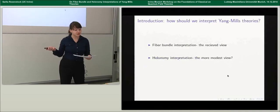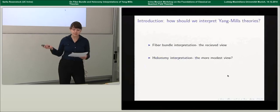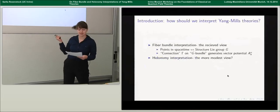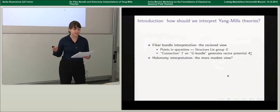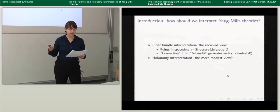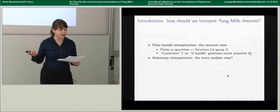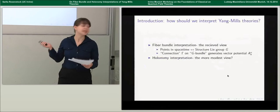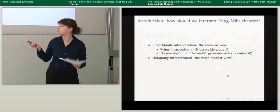In the philosophy of physics literature, the interpretations of Yang-Mills theory divide roughly into two camps based on two distinct geometric formulations of the theory. The fiber bundle interpretation is taken to be the received view. According to it, each point in spacetime is associated with a Lie group G, forming what's called a principal bundle over spacetime. The vector potential in electromagnetism — or Yang-Mills field more generally — is understood in terms of something called a connection on that principal bundle, and the Yang-Mills field strength is the curvature of that connection.